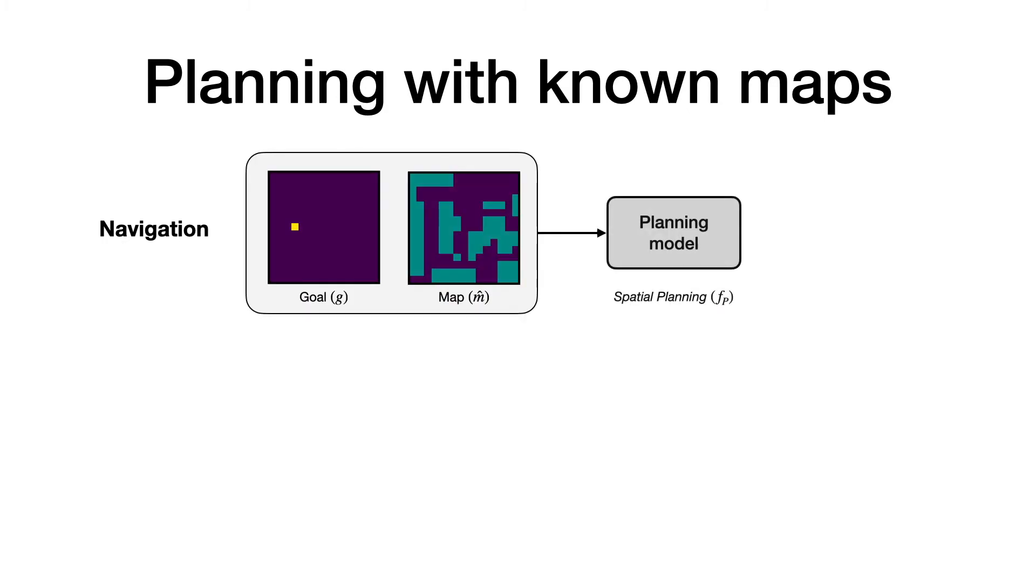In the first setting, the map and goal location are given as input to the planning model and the objective is to predict action distances or the number of actions required to reach the goal from all other traversable locations.